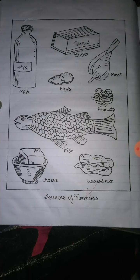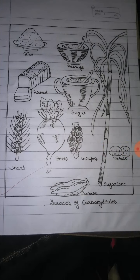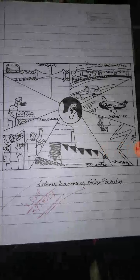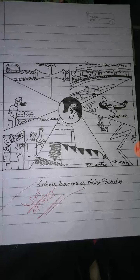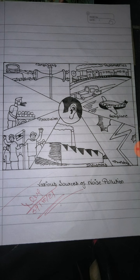Some diagrams have been given: sources of proteins, sources of carbohydrates, various sources of air pollution, and various sources of noise pollution. These are four diagrams along with questions and answers that you can complete.